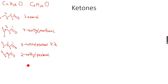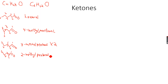So does this have any stereoisomers? There are no carbon-carbon double bonds, so no geometric isomers. But it does have a chiral center because the second carbon atom is attached to four different groups, so it exists as two optical isomers.